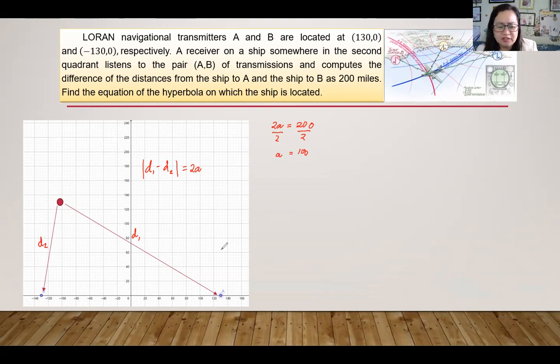Now the transmitters A and B are located at the focus. So the location of the transmitters A and B will serve as the focus. So since we have the center of the hyperbola at (0,0), then we can have C equal to 130.